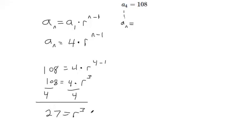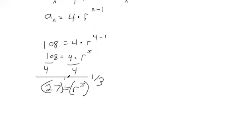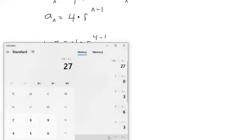If you ever need to get r by itself and it's to some power other than a square, the trick is to raise both sides to the reciprocal power. Like if it was r to the fifth, I'd raise both sides to the one-fifth power. If it was r to the 70th, I'd raise both sides to the one-seventieth power. In other words, that's a cube root on your calculator — a one-third power is the same thing as a cube root.